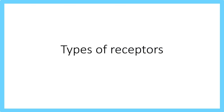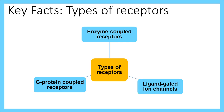Let's look at types of receptors. There are three main types: enzyme-coupled receptors, ligand-gated ion channels, and G-protein coupled receptors.